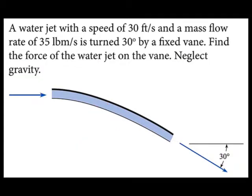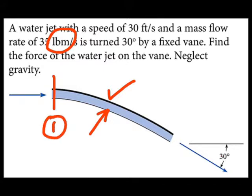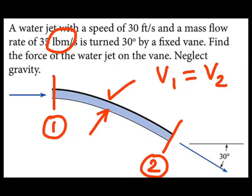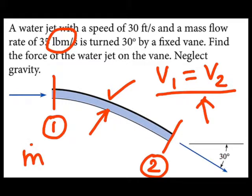Let me connect this to what I already know. When I see pounds mass, I know I'm going to need some unit conversions. And when I see a vane with a free liquid jet of water in air like this, I know the velocity at section 1 will equal the velocity at section 2. I can prove this using the Bernoulli equation so long as I neglect gravity. Similarly, I can use continuity to prove that the mass flow rate at section 1 will equal the mass flow rate at section 2.